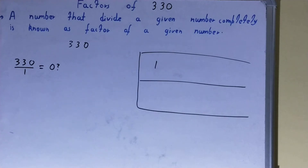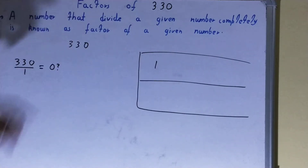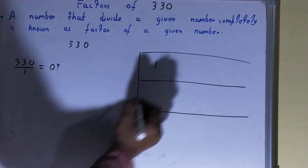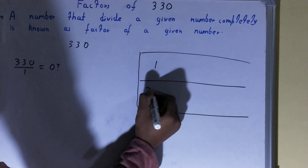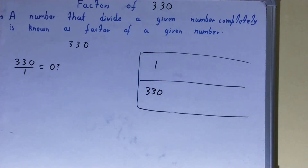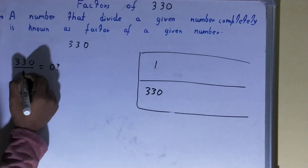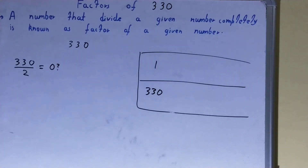With the help of this one we can find out another factor — how? 1 into what times is 330? 1 into 330 times. So 330 will also be a factor. Now after 1 we will check with 2.